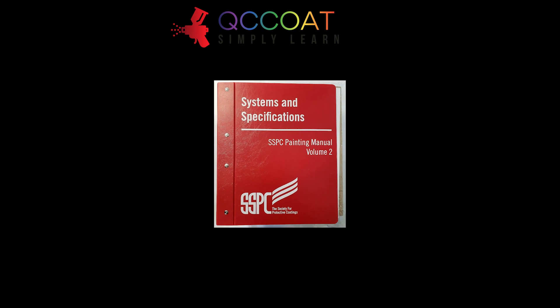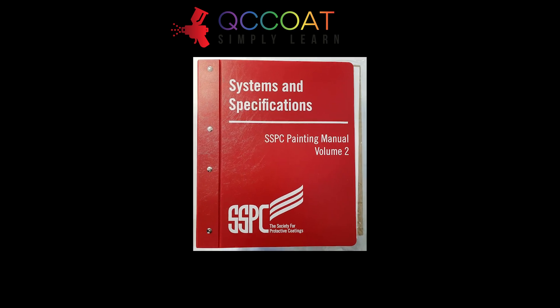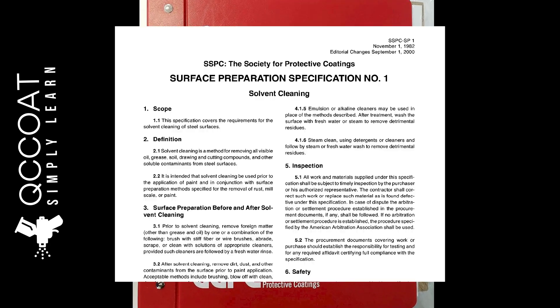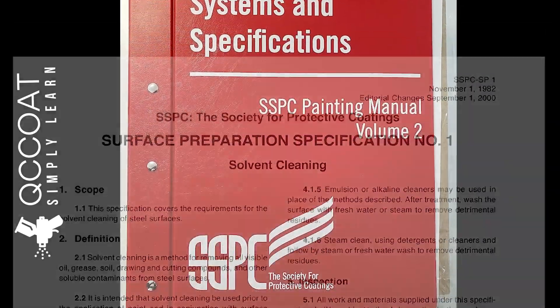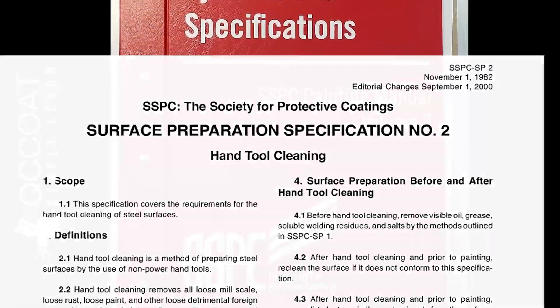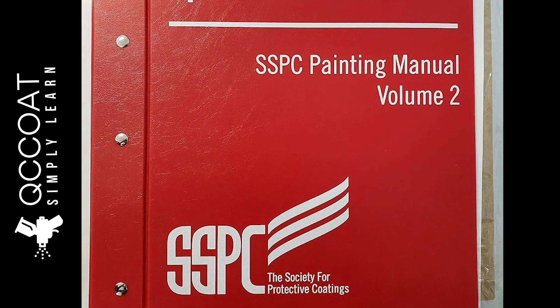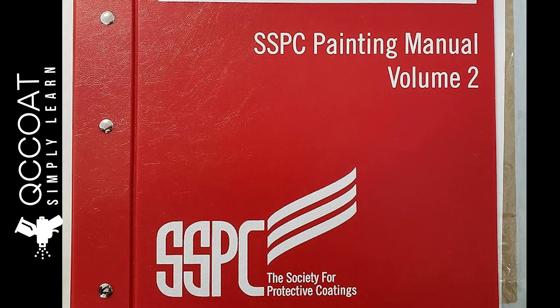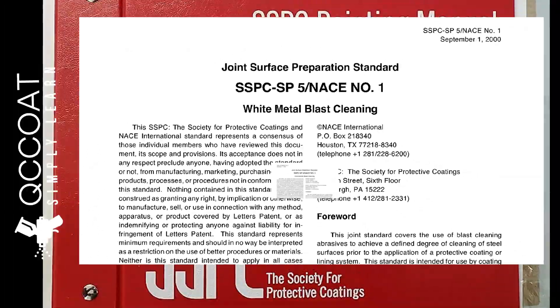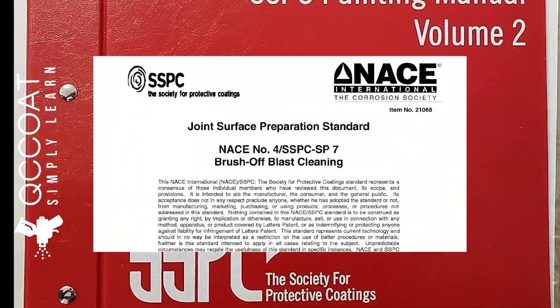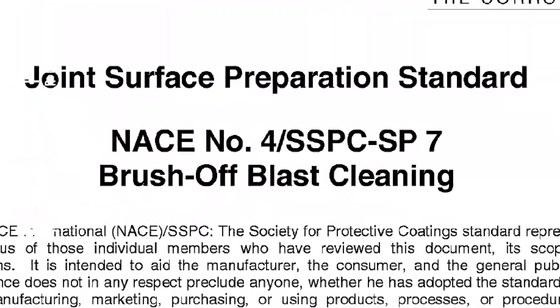In 1952, the Steel Structures Painting Council in the USA published a series of specifications: SP1 solvent cleaning, SP2 hand tool cleaning, SP3 power tool cleaning, SP4 flame cleaning of new steel, SP5 white metal blast cleaning, SP6 commercial blast cleaning, SP7 brush-off blast cleaning, and SP8 pickling.